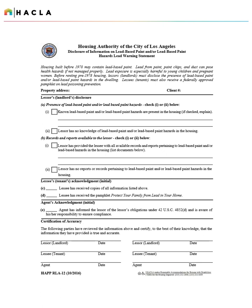Housing built before 1978 may contain lead-based paint. Lead from paint, paint chips, and dust can pose health hazards if not managed properly. Lead exposure is especially harmful to young children and pregnant women. Before renting pre-1978 housing, landlords must disclose the presence of lead-based paint and/or lead-based paint hazards in the dwelling. Tenants must also receive a federally approved pamphlet on lead poisoning prevention. Landlords should complete the disclosure; tenants should initial in Sections C and D, the landlord should initial in Section E, and both landlord and tenant should sign and date at the bottom.